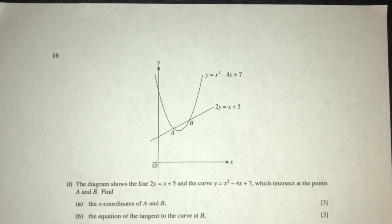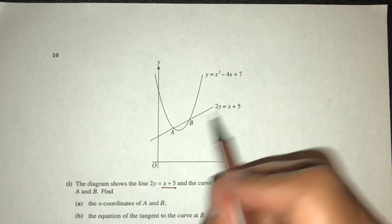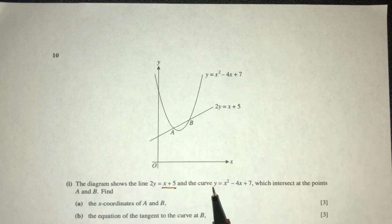Okay, so let's move on to the next question. The diagram shows the line 2y equal to x plus 5.